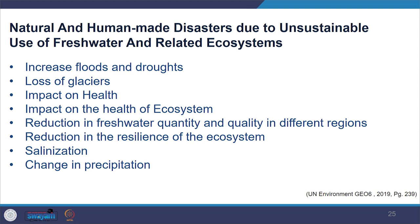We are also witnessing reduction in the resilience of aquatic systems because of natural and human-made disasters. In addition, we are experiencing unsustainable use of fresh water and related aquatic systems. We are also noticing increased salinization due to global warming and land use changes, melting ice and snow reserves, pumping of groundwater, drying of continents, and rising sea levels — all influencing the quality of water.